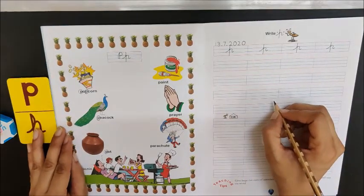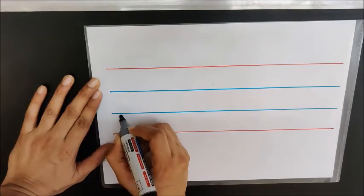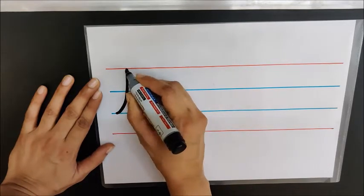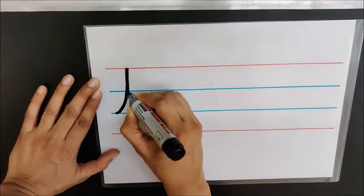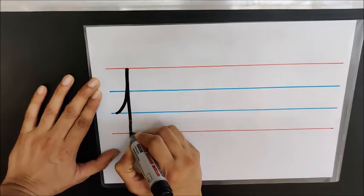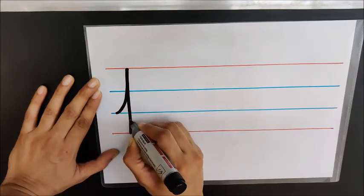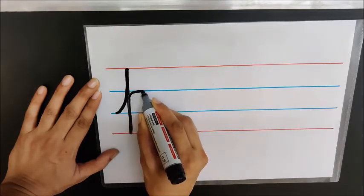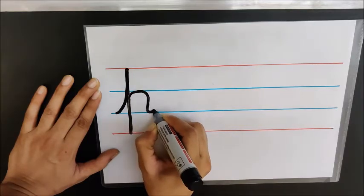Now I will show you the formation of letter P. You have to start from the lower blue line, go up, touch the red line. Now come back on the same line and make a standing line like this. And then again come up on the same line, then turn, touch the lower blue line, and make a small tail.